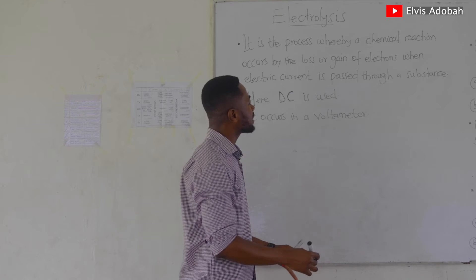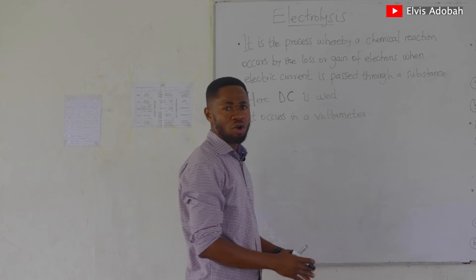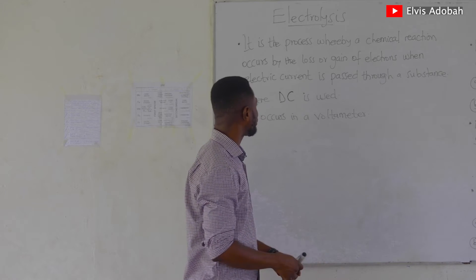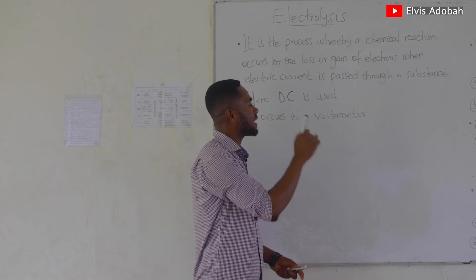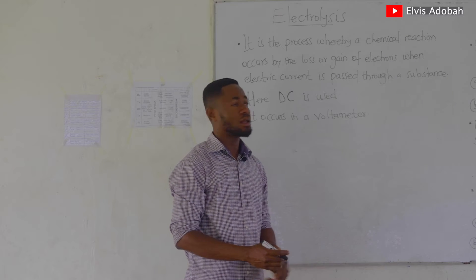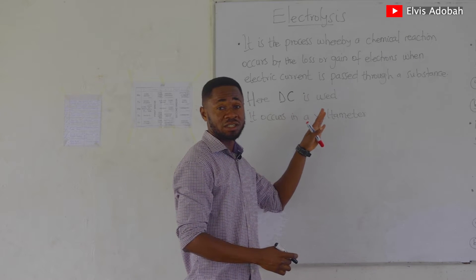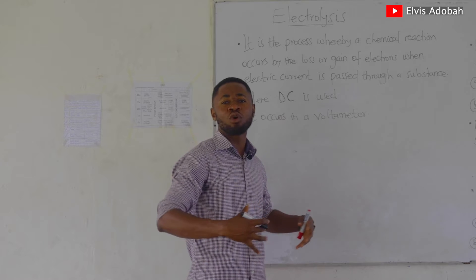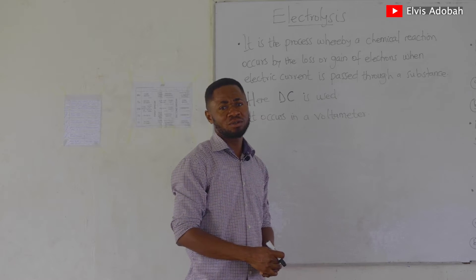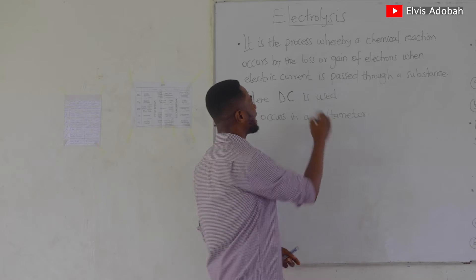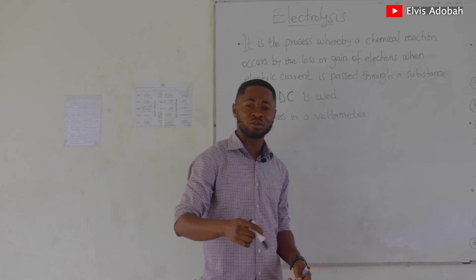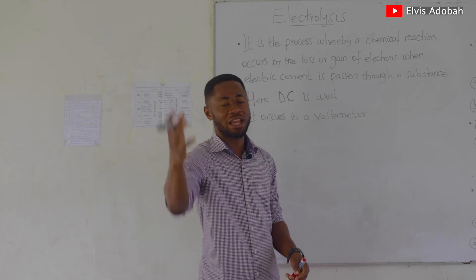In electrolysis, a chemical reaction occurs by the loss or gain of electrons when electric current is passed through a substance. In this situation, the substance doesn't want to give off the electrons, so we use electric current or electricity to force that substance to lose electrons.